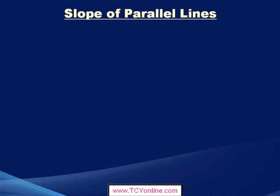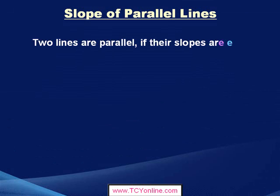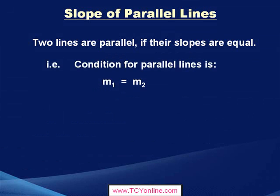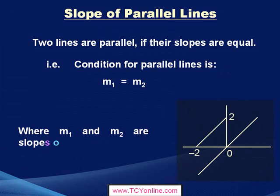Now, let's look at the slope of two parallel lines. Two lines are said to be parallel if their slopes are equal. So we can say that the condition for two parallel lines is that m1 should be equal to m2, where m1 and m2 are the slopes of the two parallel lines.